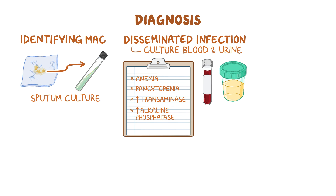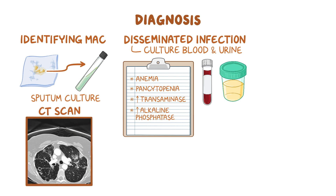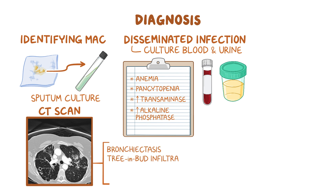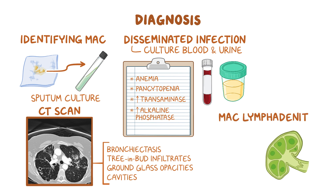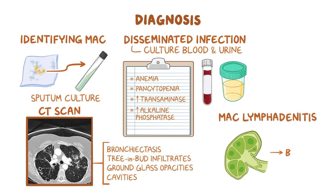Liver function tests may show high transaminase and alkaline phosphatase levels. To assess pulmonary involvement, a CT scan should be done, which may show evidence of bronchiectasis, tree-and-bud nodular infiltrates, ground glass opacities, or cavities. Finally, in cases of MAC lymphadenitis, a lymph node biopsy should be done.